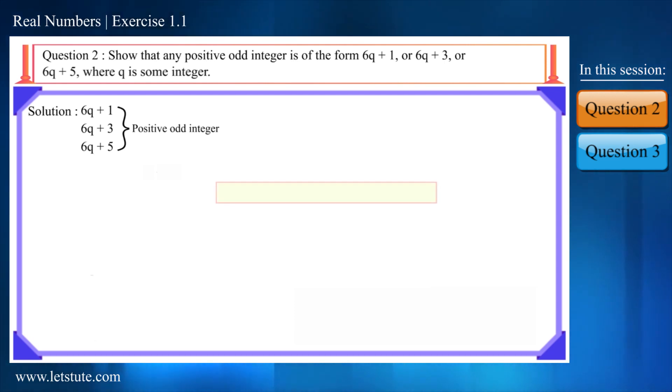Do you know that according to Euclid division lemma if a is a positive integer then we can write it as in the form of a equal to bq plus r where r will be greater or equal to 0 and always will be smaller than b.